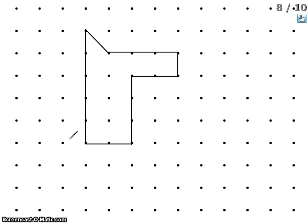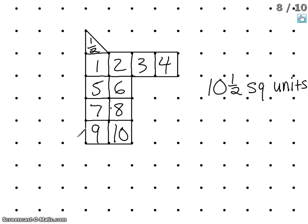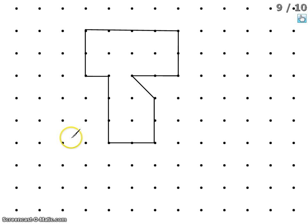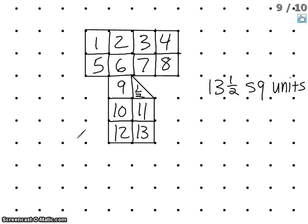Pause this video and find on your own the total amount of square units inside this irregular figure. The answer to that problem is 10 and one-half square units inside this irregular shape — that is the correct answer. Here's one more problem for you to do all by yourself. Pause, complete it, then press play for the correct answer. The answer is 13 and one-half square units.